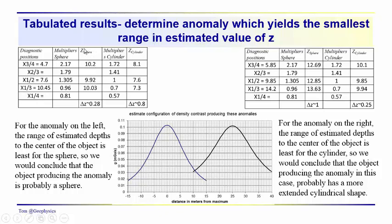If we do that assuming that this anomaly is produced by a sphere, then we get these estimates for z, and the range in these estimates is 0.28. Assuming that it's a cylinder, we get these estimates of z. Notice that z is a little bit smaller. It's probably about 7.7 or so on average. And that the range in estimates is 0.8. So the anomaly on the left, the range in the estimates of z are less, assuming a sphere, than they are assuming a cylinder. So we would conclude, then, that the anomaly that we see here is most likely produced at something closer in shape to a equidimensionally shaped or a spherically shaped object.